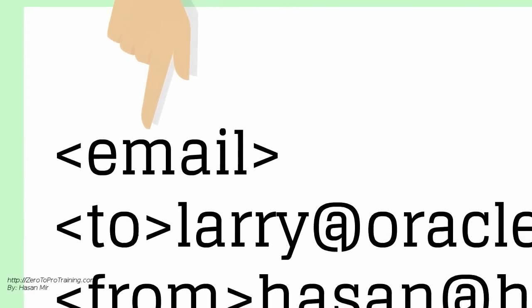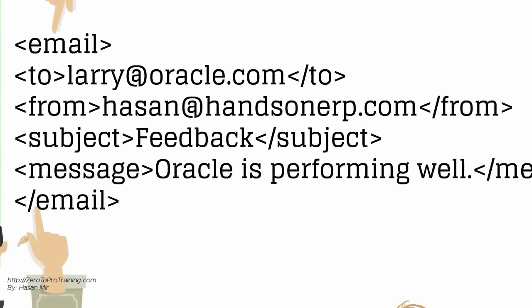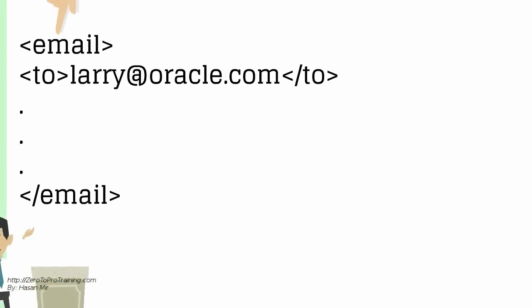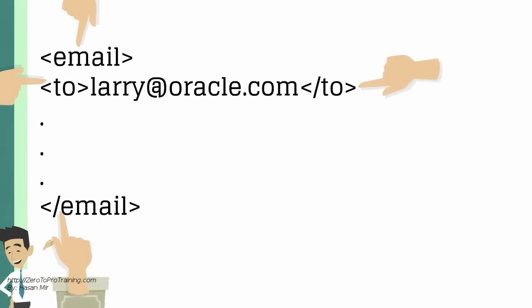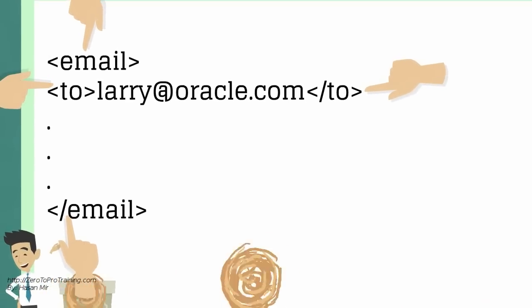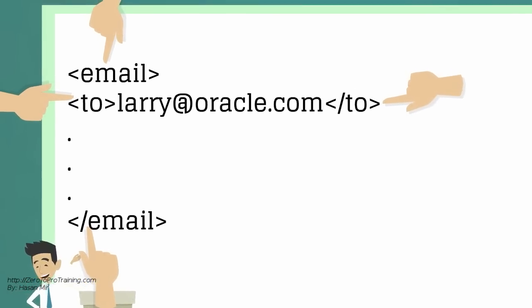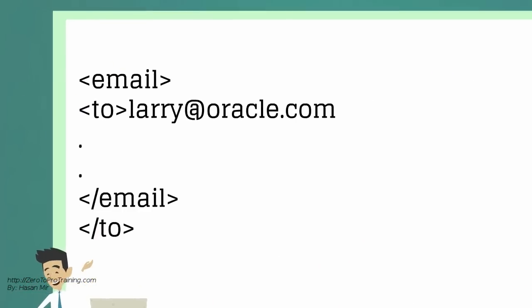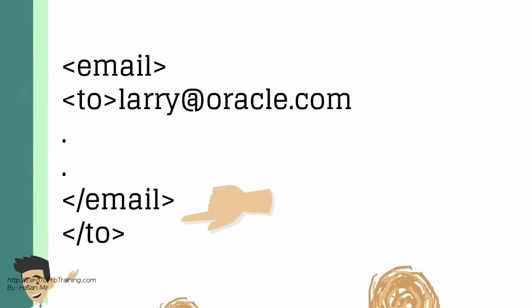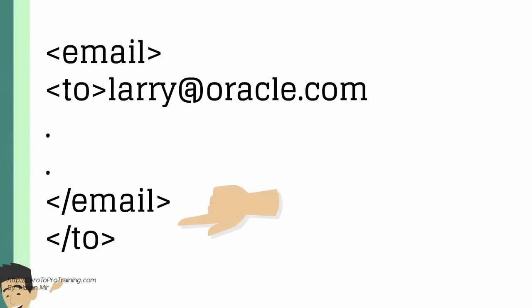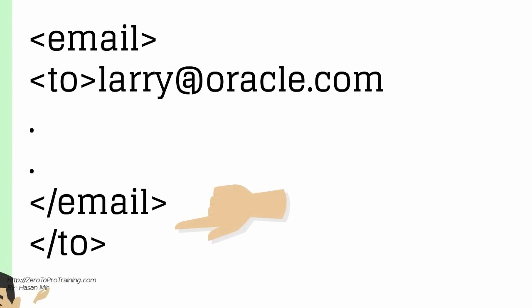Tags can nest, but not overlap. Here is an example of nested tags: the email tag begins, then the 'to' tag begins, the 'to' tag ends, and then the email tag ends. Here is an example of overlapping tags — hence the document is invalid, as the email tag is closed before the 'to' tag.